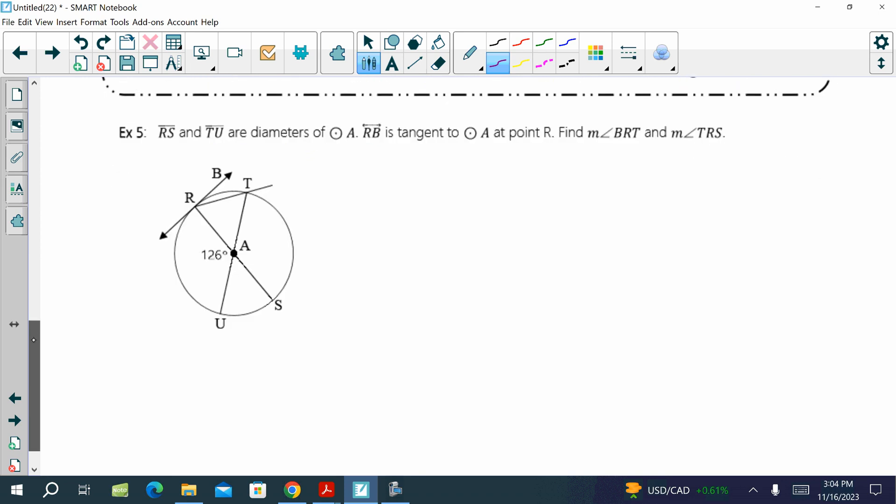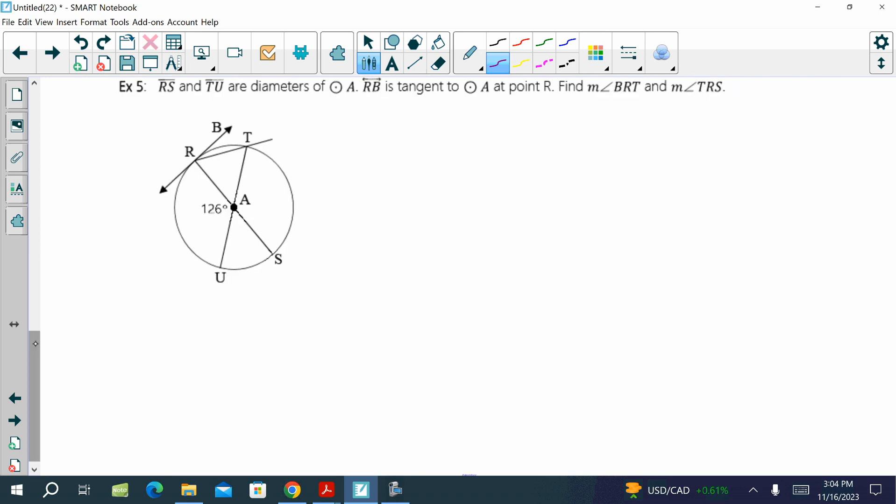So let's try it. RS and TU are diameters of circle A. Line RB is tangent to circle A at point R. Find the measure of angle BRT. So we're looking at BRT. So in order to find that angle, we need its arc, RT, correct? So we know the measure of angle BRT equals half of the measure of arc RT. So we need to find RT. How do you think we can do that?